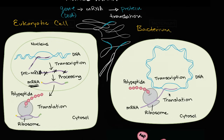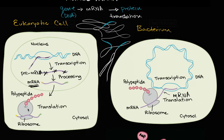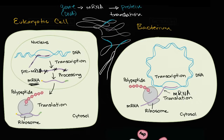You see the analogous thing happening in a prokaryotic cell, except you don't see the nuclear membrane and you don't see that processing step — so you can just consider this mRNA right over there. The questions are: how does this process happen, and what even is a ribosome?